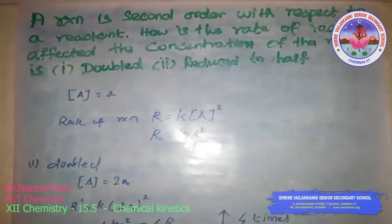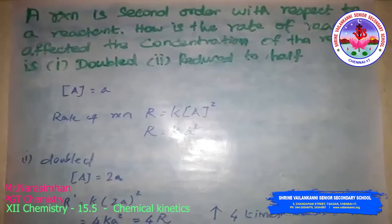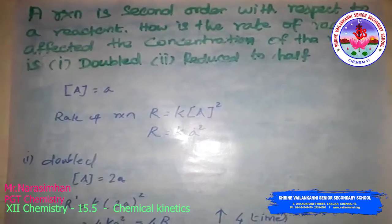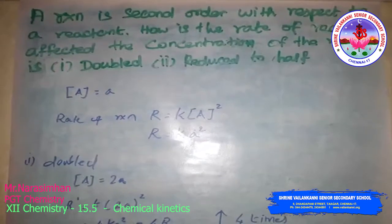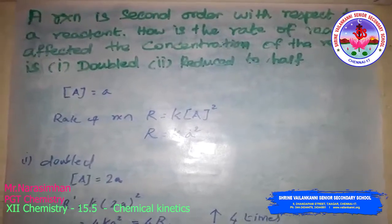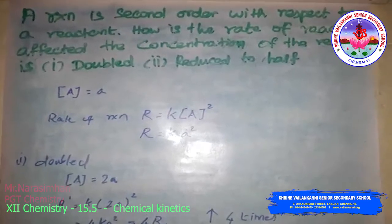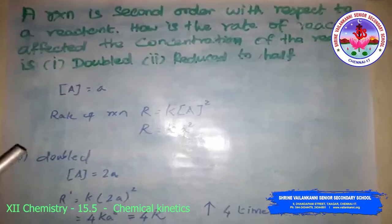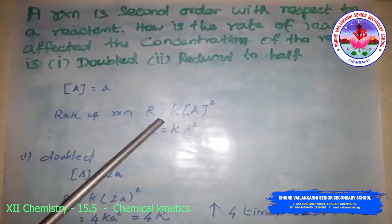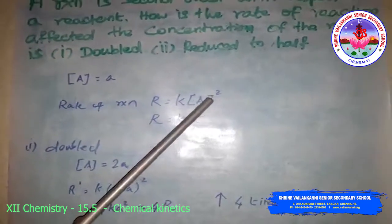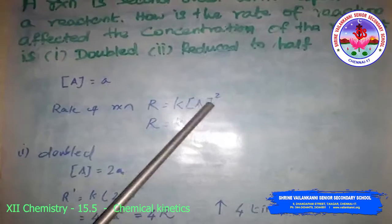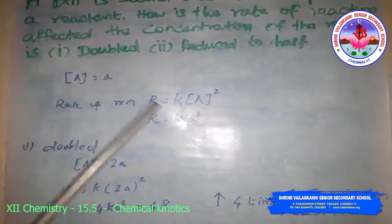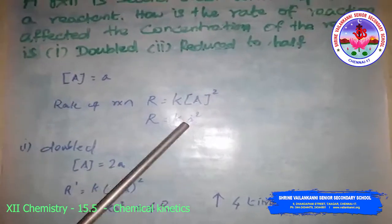A reaction is second order with respect to a reactant. How is the rate of reaction affected when the concentration of the reactant is doubled and reduced to half? The concentration of reactant A is equal to A, so the rate of reaction is R = K[A]², because it is a second order reaction. Therefore, rate R = KA².